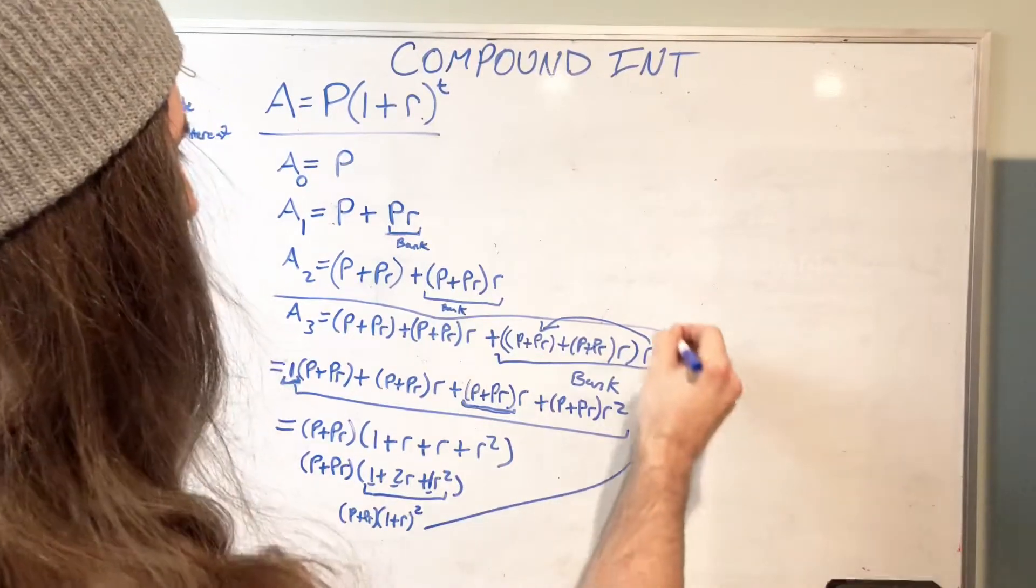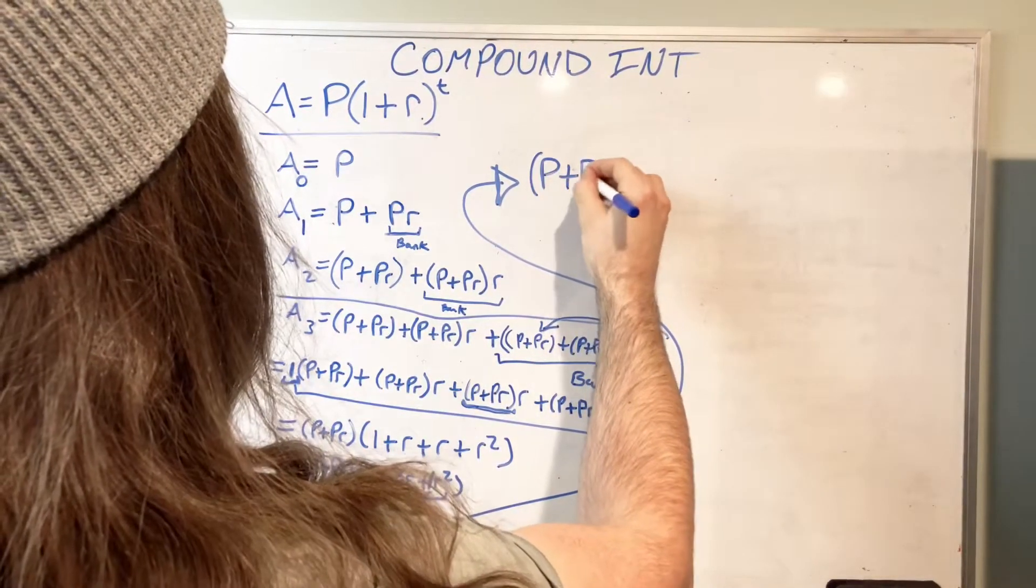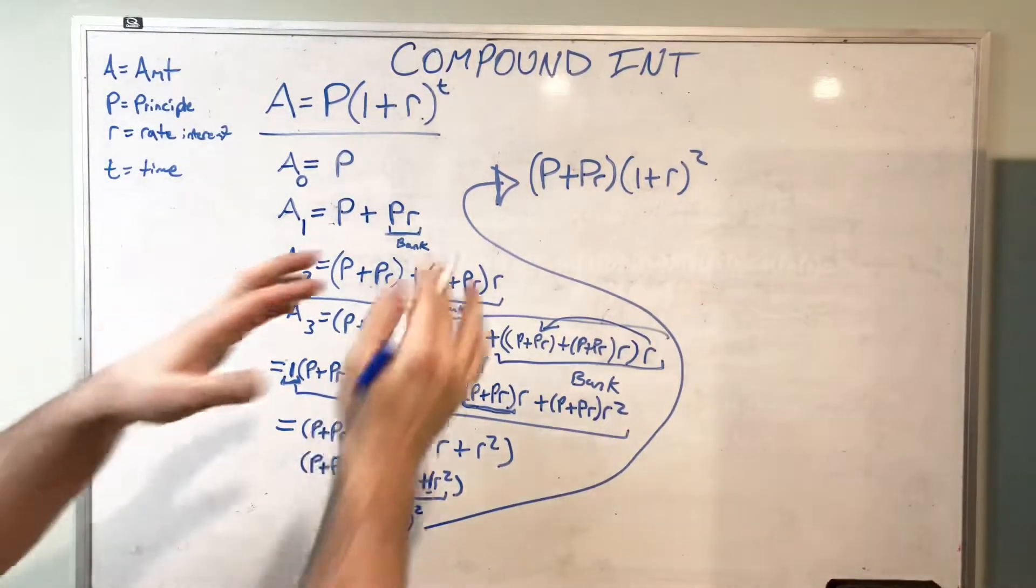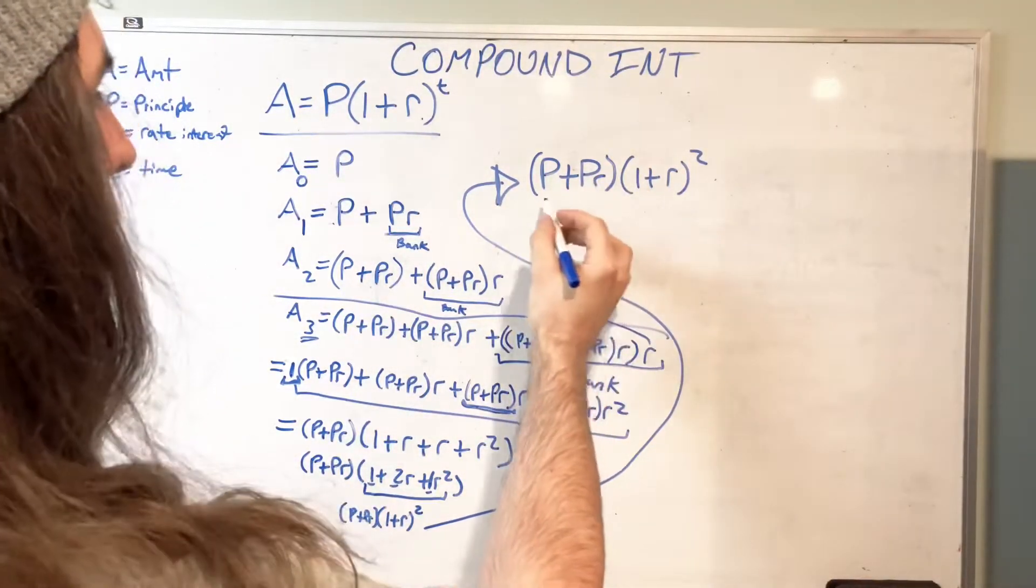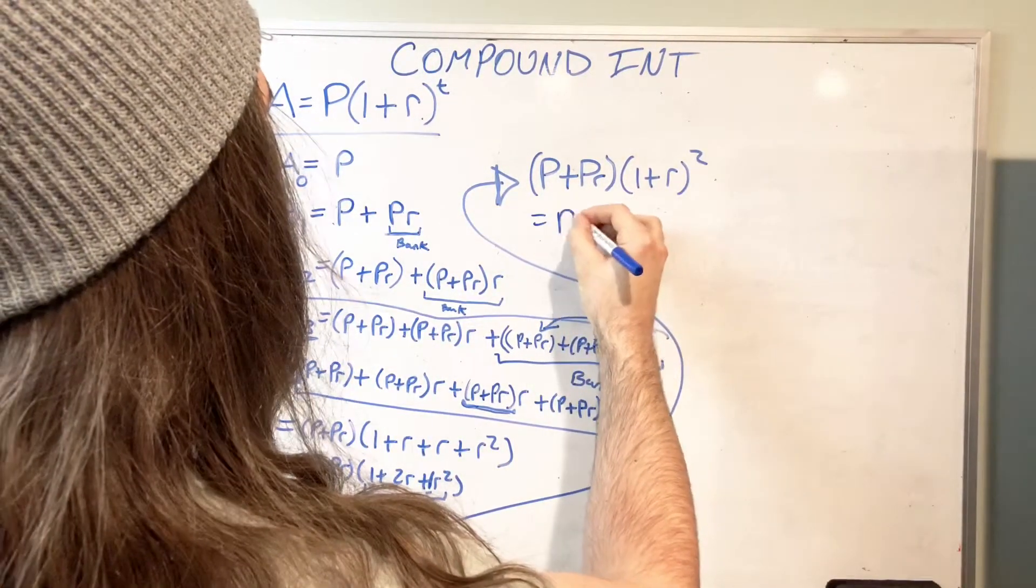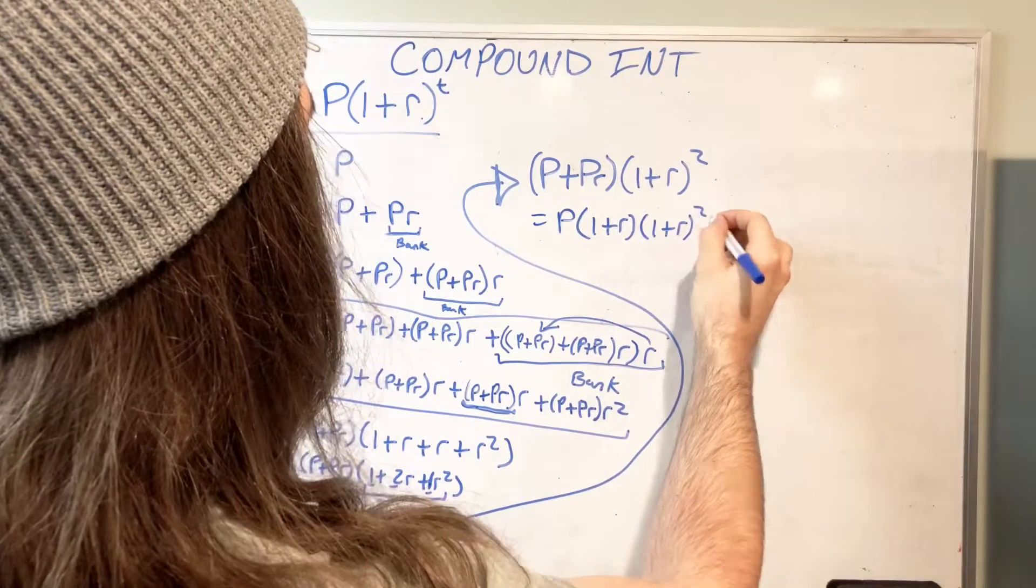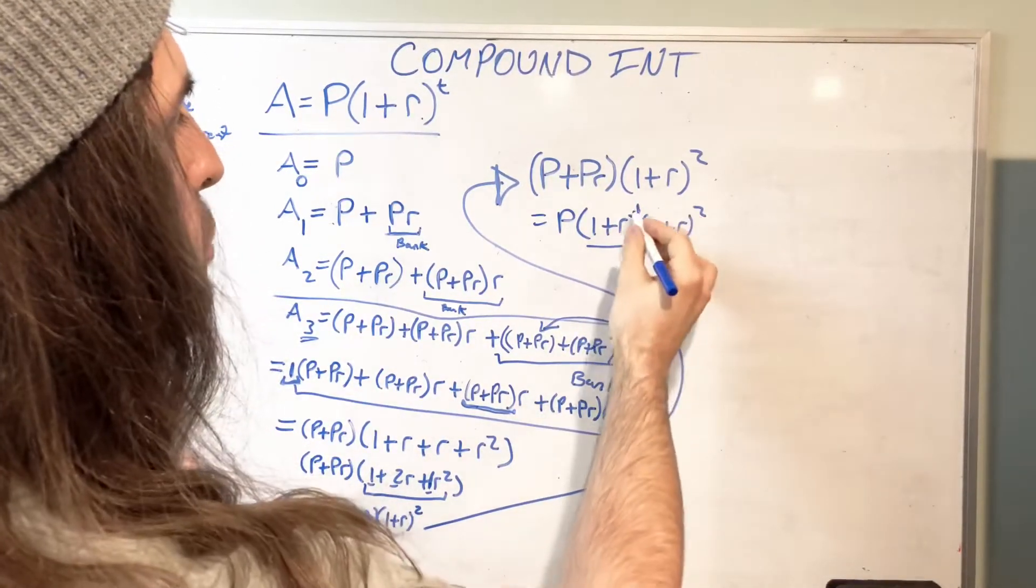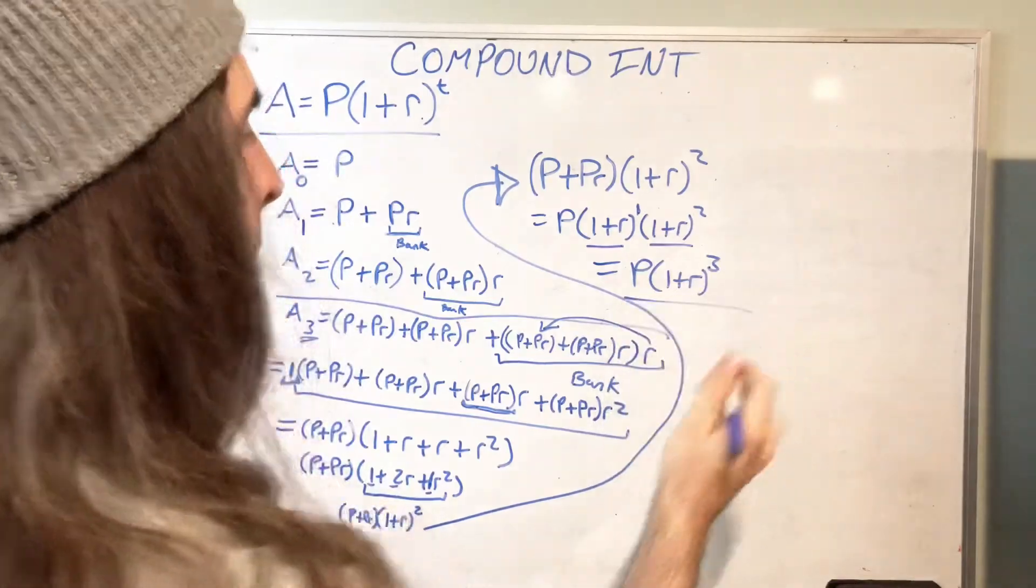We're on the home stretch, ladies and gentlemen. We have P plus PR times one plus R squared. Now, P plus PR - what can we do? We can remove a P. So that equals P times one plus R, because if we distribute, we get P plus PR times one plus R squared. This term and this term, same thing. You add exponents. So you get P times one plus R to the third. We are done.